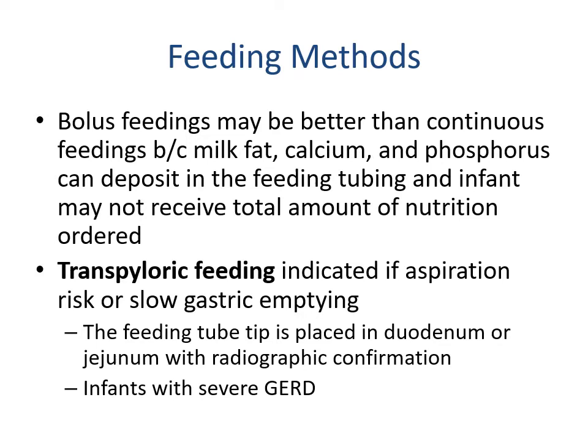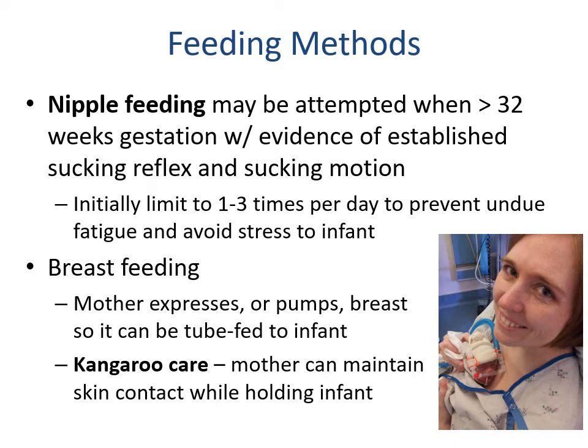Transpyloric feeding is indicated for aspiration risk or slow gastric emptying, similar to duodenal or jejunal tubes. The feeding tube tip is placed in the duodenum or jejunum and confirmed with radiographic confirmation — indicated for children with severe GERD, aspiration risks, etc.